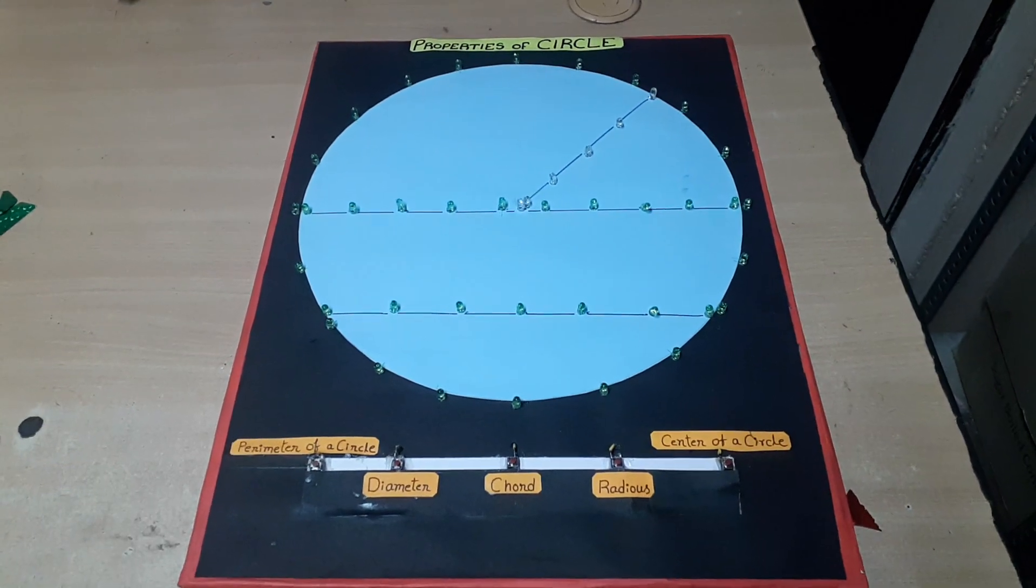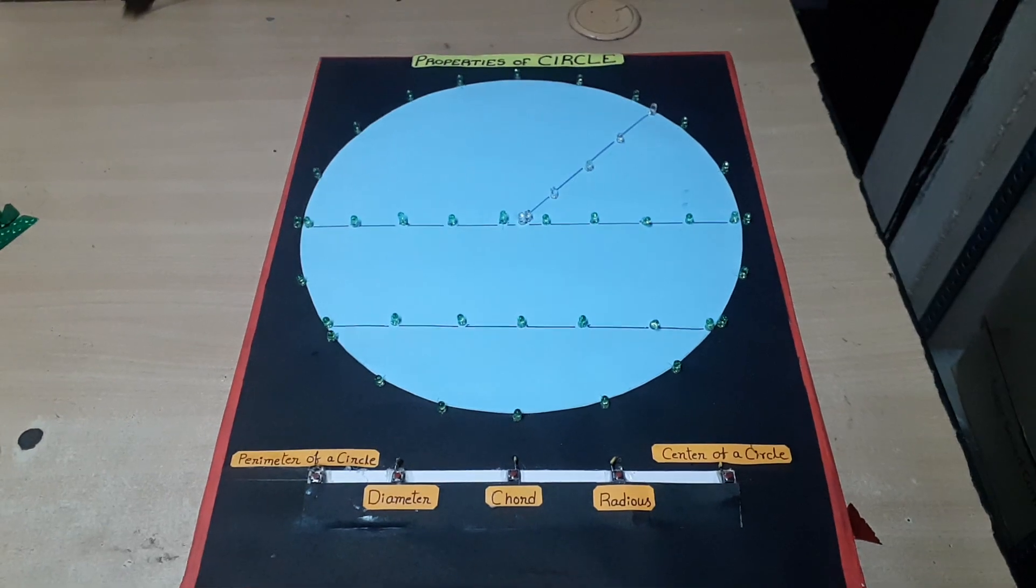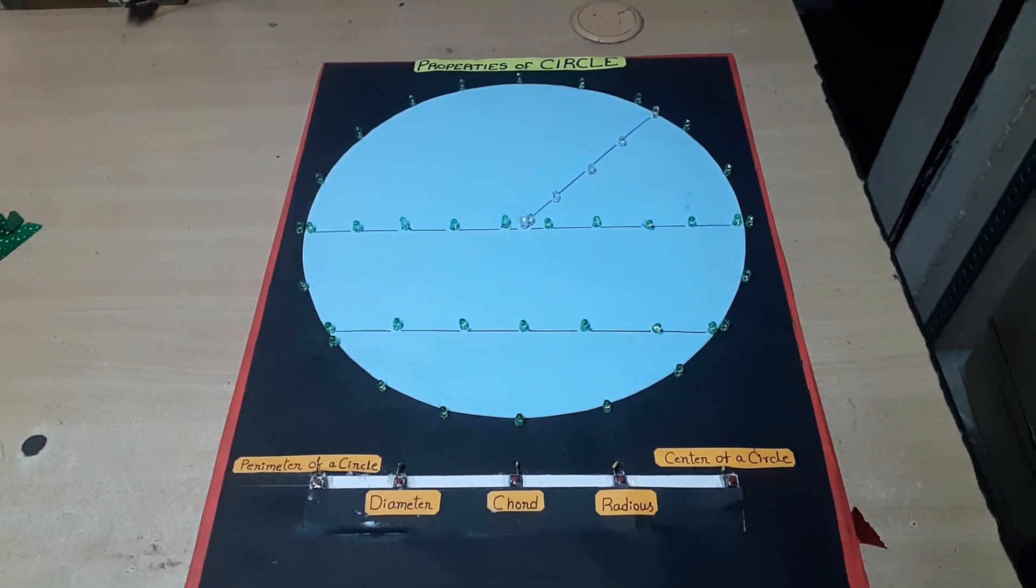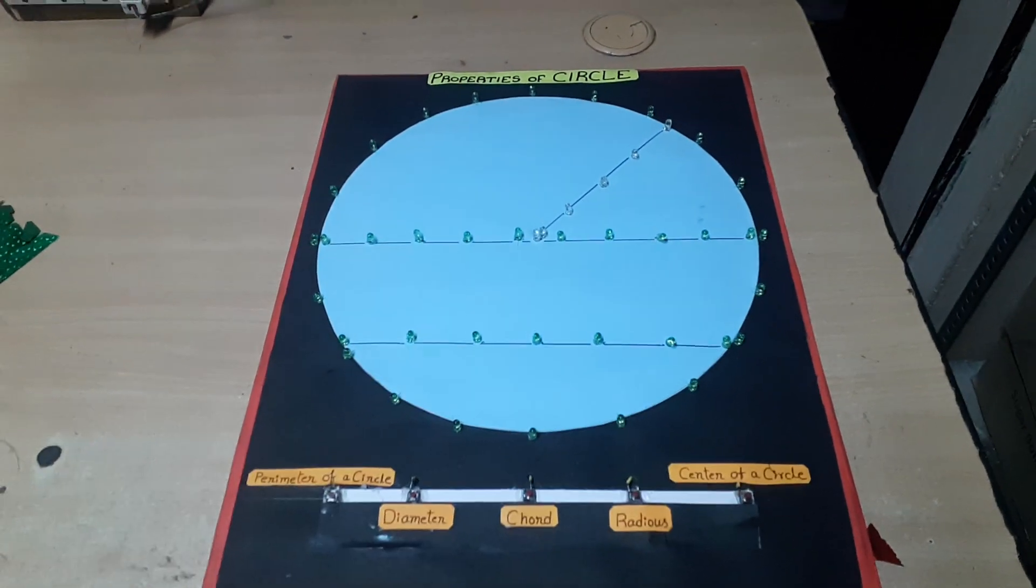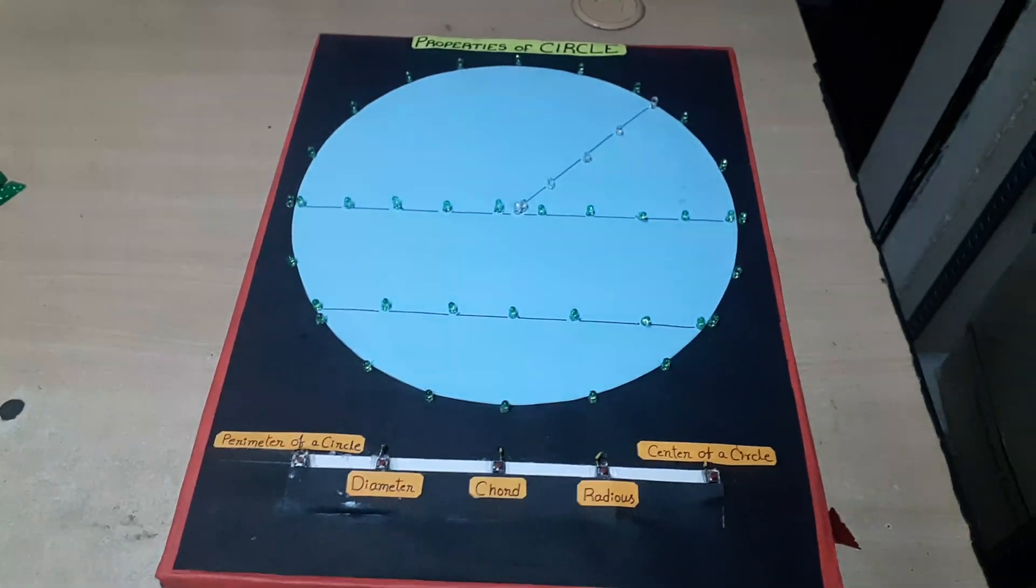The project name is Properties of a Circle. In this project, we are demonstrating the properties of the circle using light emitting diodes or LEDs. These are small lights that form shapes.